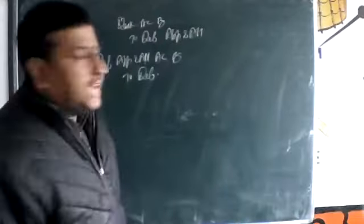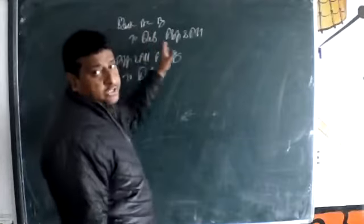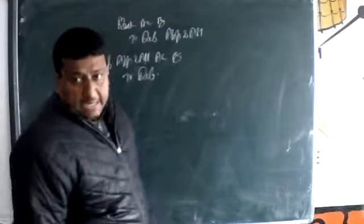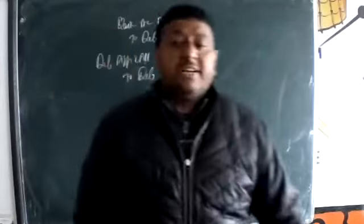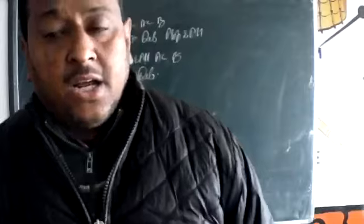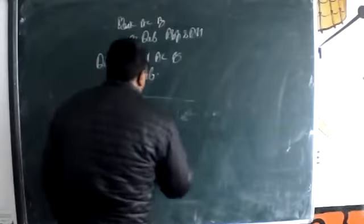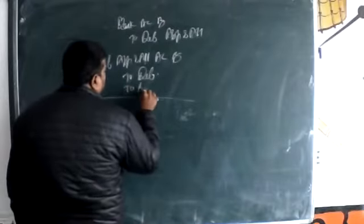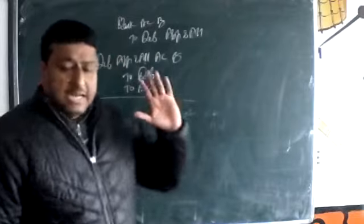In share, bank account debit to share application and allotment, and then share application and allotment account debit to share capital. On the place of share capital, we are using debenture, and on the place of share, we are going to use debenture. If premium will come, then premium will come on this side. On this way we are doing that.